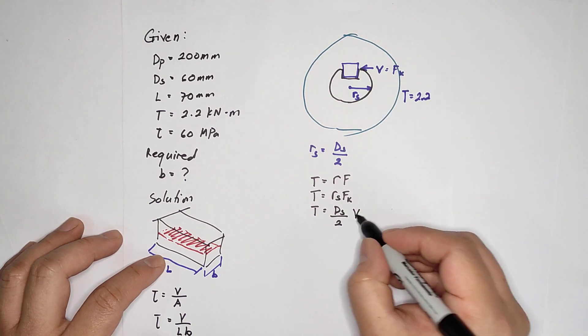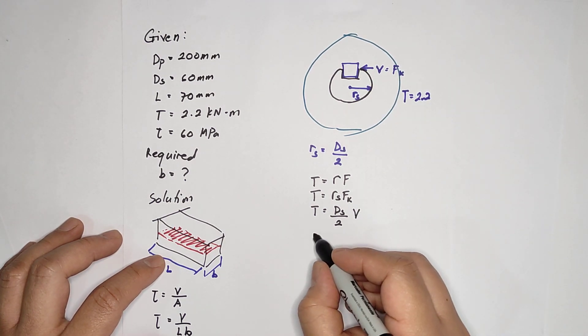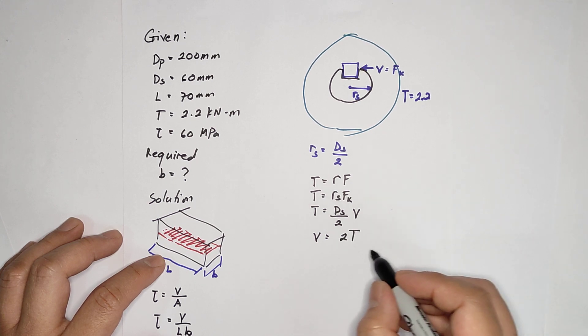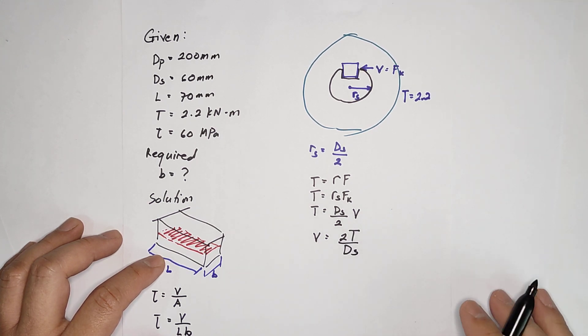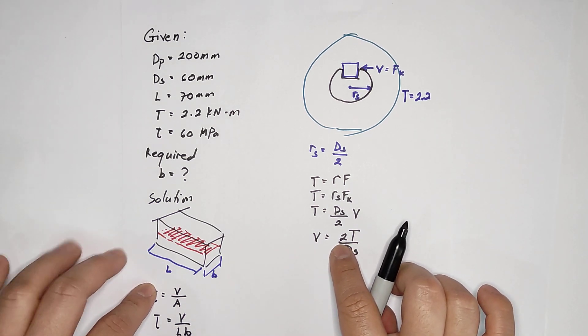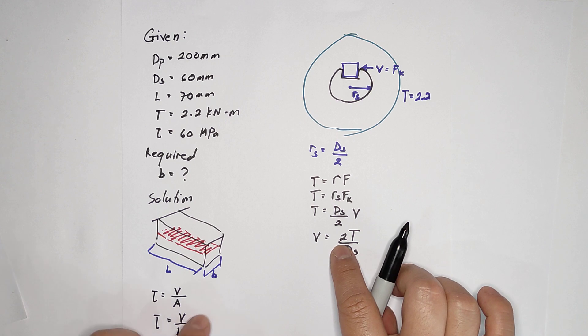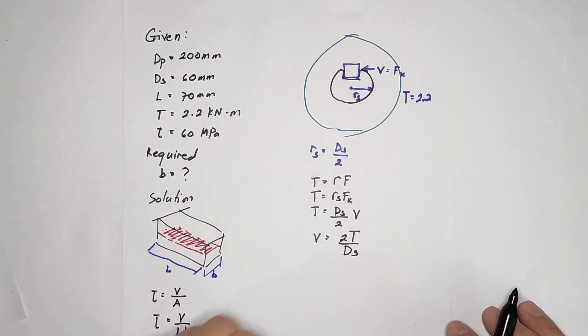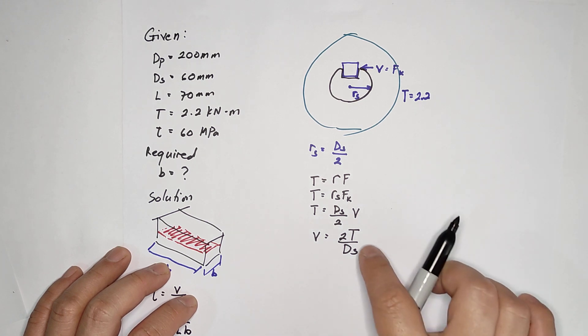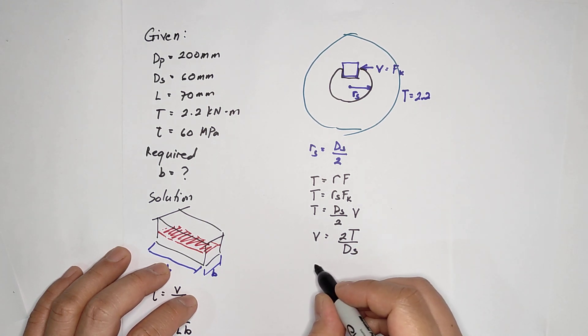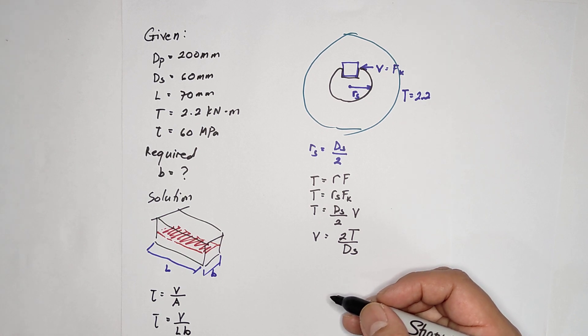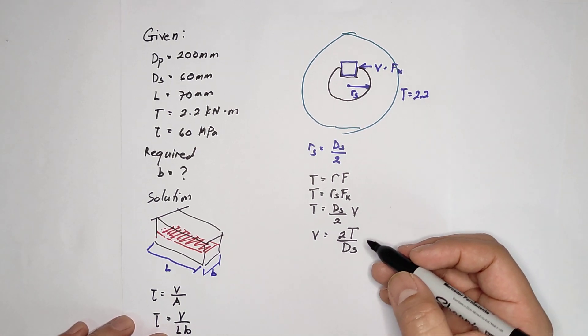FK is the same as V, so now you now have V that is equivalent to 2 torque over DS. So if you have V, you can compute for the width or the force shear force. Now I think this is given and this is given, we can now proceed in computation, in computing for the shear force.